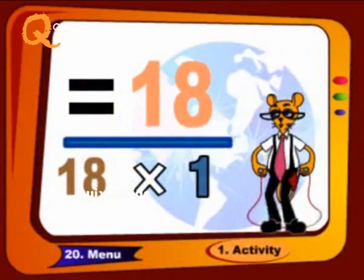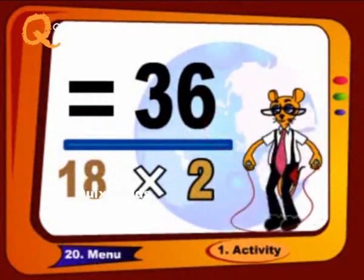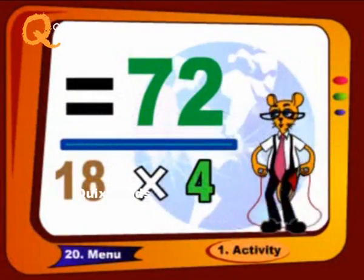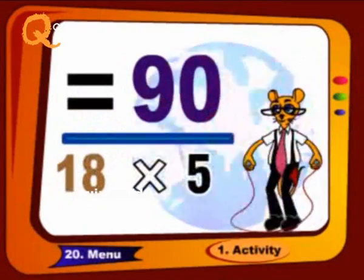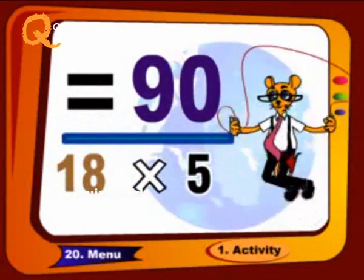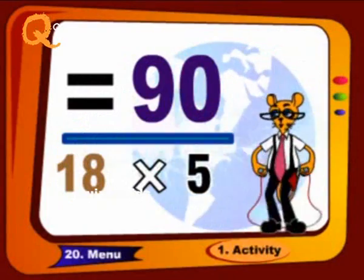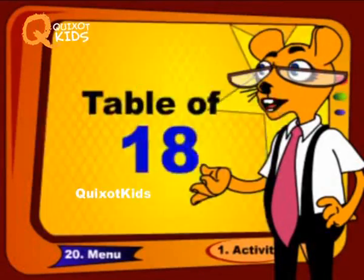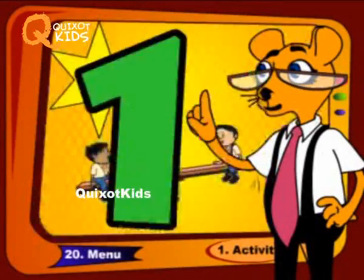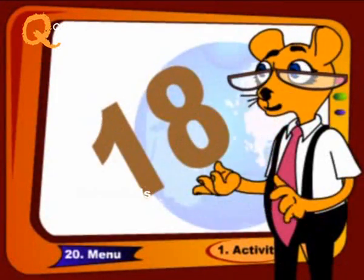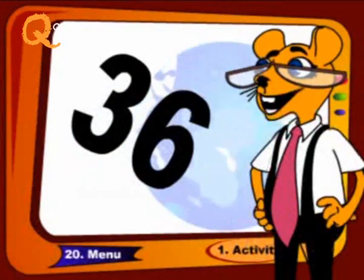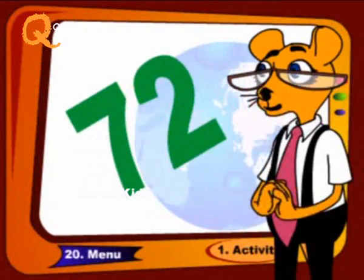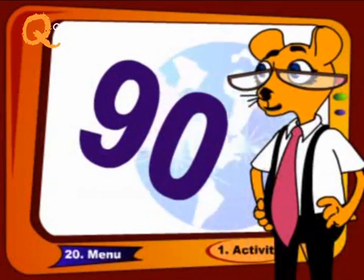18 1s are 18, 18 2s are 36, 18 3s are 54, 18 4s are 72, 18 5s are 90. Come on, sing with me. Repeat it again like this: 18, 36, 54, 72 and 90.